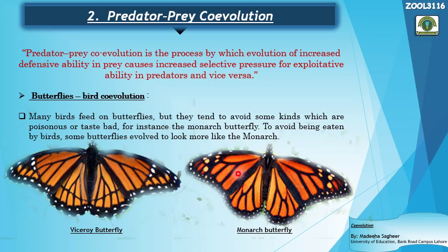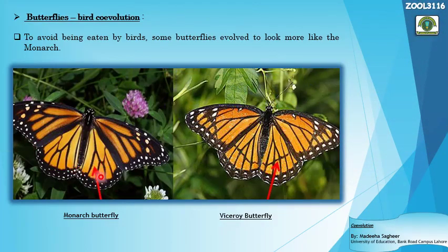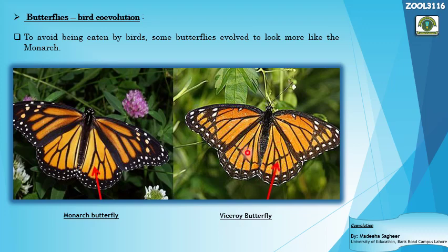Looking at the two butterflies, the difference can be seen here — the monarch is the model and the viceroy is the mimic. The viceroy mimicked the color pattern of the monarch to save itself from being eaten by birds. The distinguishing feature is a line intersecting the wing veins: the butterfly with that intersecting line is the viceroy, while the monarch has no such line.